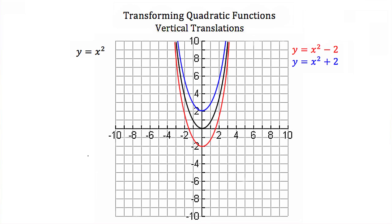Now let's talk about vertical translations. Here again we have our parent function y equals x squared graphed in black. Then we have y equals x squared minus 2 graphed in red, and y equals x squared plus 2 graphed in blue. Notice that the only difference between these three parabolas are the constant terms that are added or subtracted at the end of our equation.